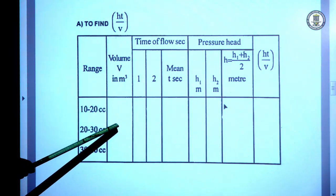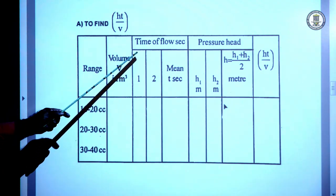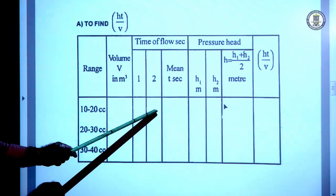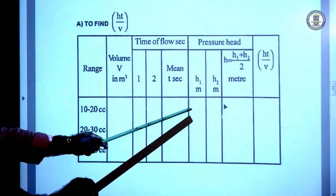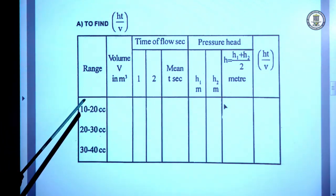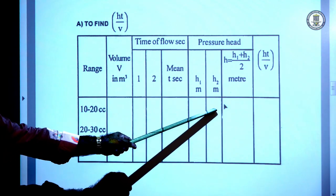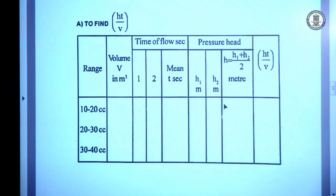In the tabular column, we fix the range — here taking the same volume V so the ranges are 10 to 20, 20 to 30, 30 to 40, etc. The volume is 10 cc each time. The time of flow is determined twice and the mean time is calculated. H1 is measured up to the first level and H2 up to the second level, then H = (H1 + H2)/2 and H·T/V is calculated.